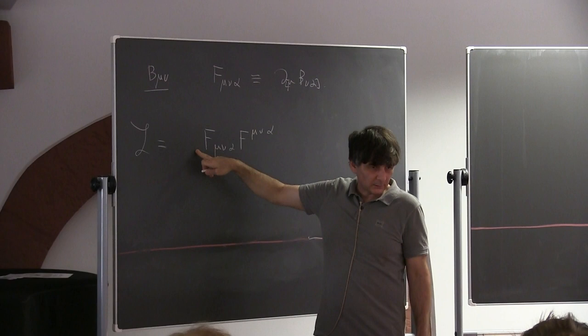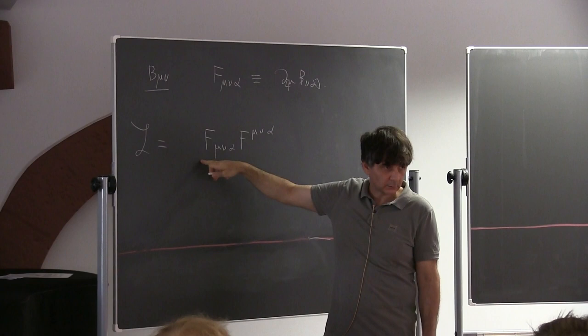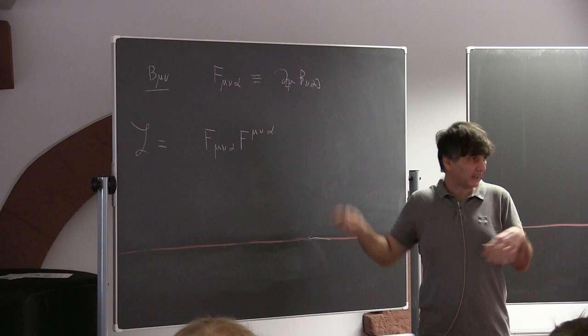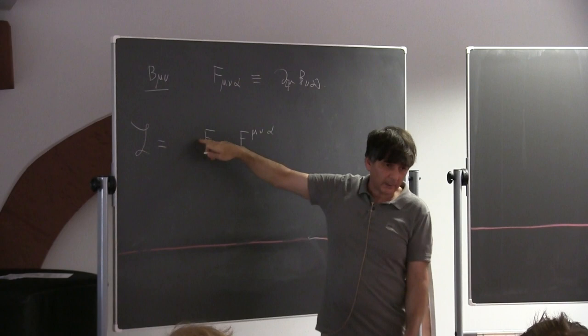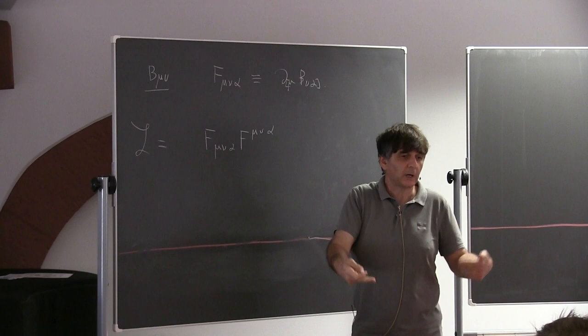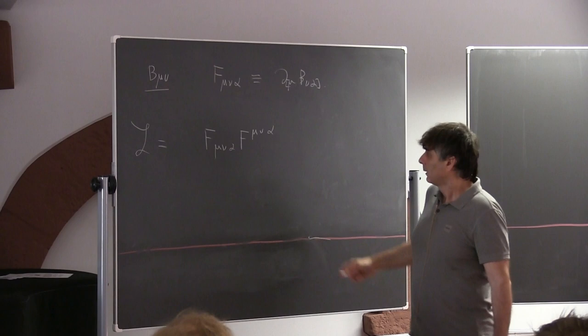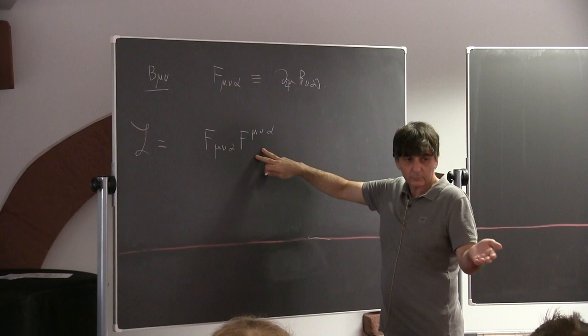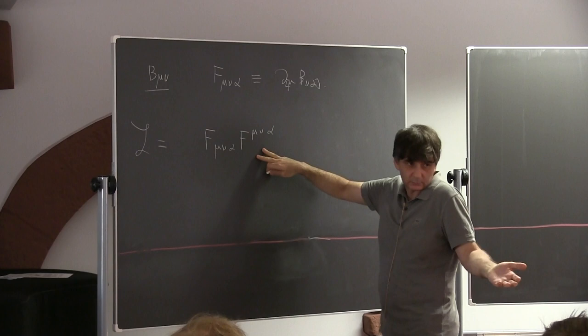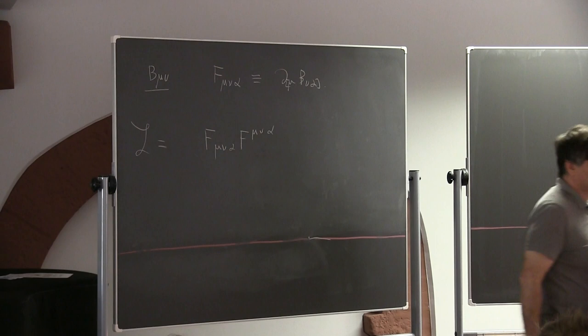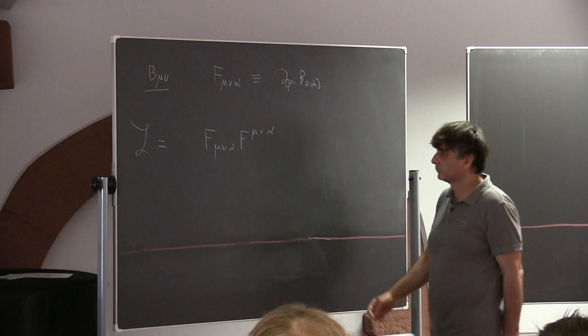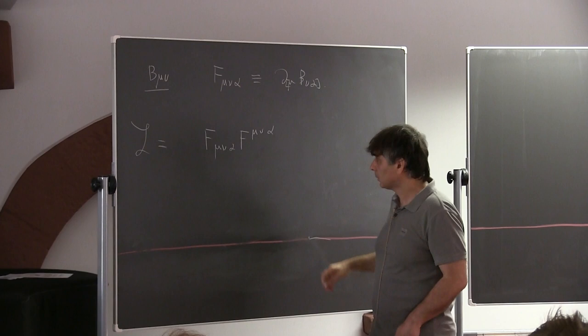It's convenient to include combinatoric factors like 1 over 3 factorial, but I don't want to carry them around since they are irrelevant. Every time I go to the next equation, I rescale my quantities so there is always a factor of one in front. You can do it as an exercise keeping all combinatoric factors. This is the action of a free B_μν anti-symmetric two-form field — its kinetic term. It can also couple to a source.